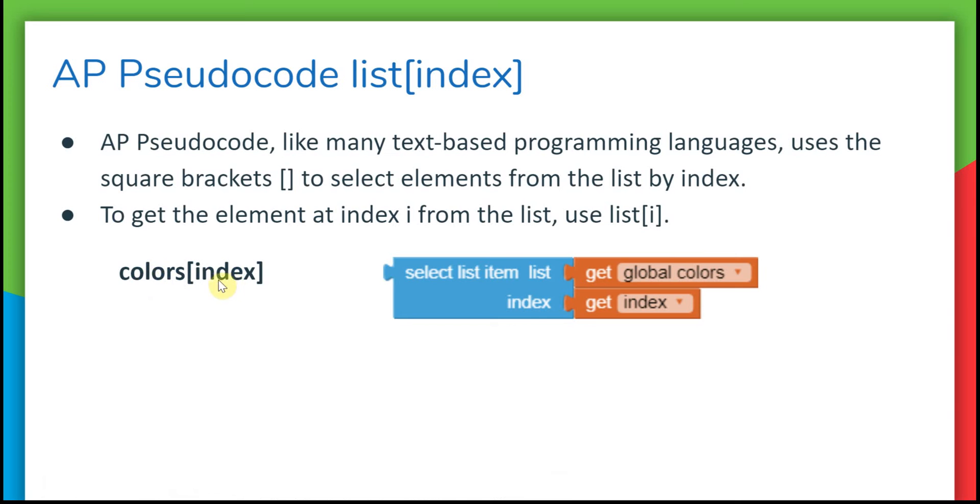Notice that the square brackets are used here to get an item from a list at a certain index. These square brackets are used in many text-based languages like Java and JavaScript. In App Inventor, we use the select list item block that does exactly the same thing as the square brackets in AP Pseudocode.